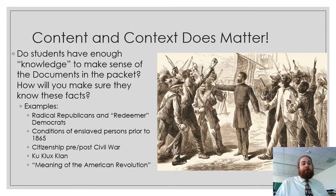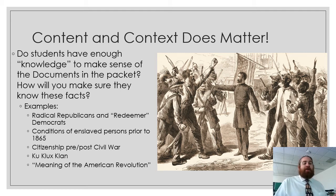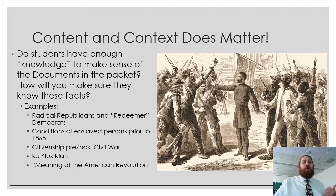I always like to start from the position that content and context matter — history matters. Starting from the assumption of what students need to know helps us figure out which facts are most important. To answer this question about the second American Revolution during Reconstruction, they would have to know about the Radical Republicans and the Redeemer Democrats — a lot of sources don't make sense without them. If they don't know about slavery prior to 1865, citizenship after the Civil War, the 13th, 14th, and 15th Amendments, the Ku Klux Klan, or the American Revolution itself, it's going to be impossible to put these sources in any sort of context. That's a great way to think about what historical content you need to teach in order to enable students to do this skill.